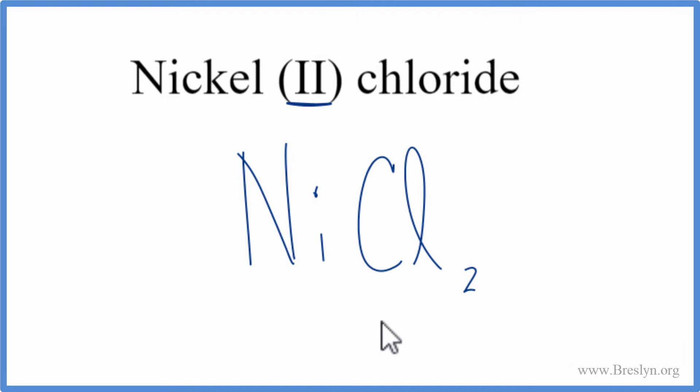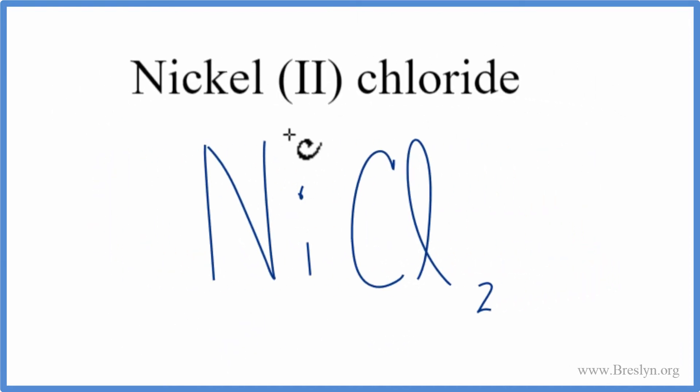Let's make sure we're right, though, and check our work. We said nickel had an ionic charge of two plus because of this Roman numeral up here. Chlorine chloride has one minus off the periodic table. So we have two of these Cls here. Two times one minus, that's two minus. One of the Ni, one times the two plus, that's two plus. So two plus, two minus, that adds up to zero. This is the correct formula for nickel(II) chloride.